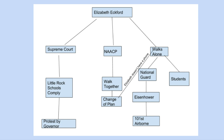They decided to integrate the school by choosing nine students. The nine students were chosen from a lottery, based on grades and all sorts of factors. The governor at the time, Governor Faubus, decided to protest this decision. All of these factors are going to come together to create cause and conflict that leads to this photo and the story of Elizabeth.